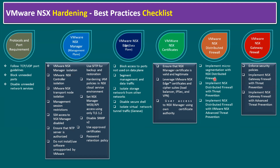Under the VMware NSX distributed firewall section: implement micro-segmentation with the NSX distributed firewall, implement the NSX distributed firewall with threat protection, and implement NSX distributed firewall with VMware NSX advanced threat protection. Under the NSX gateway firewall: implement NSX gateway firewall with threat protection and also with advanced threat protection.